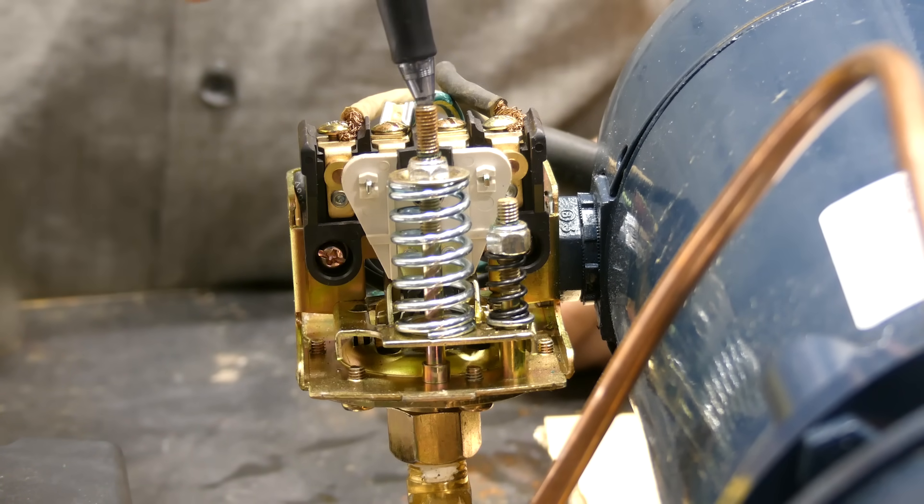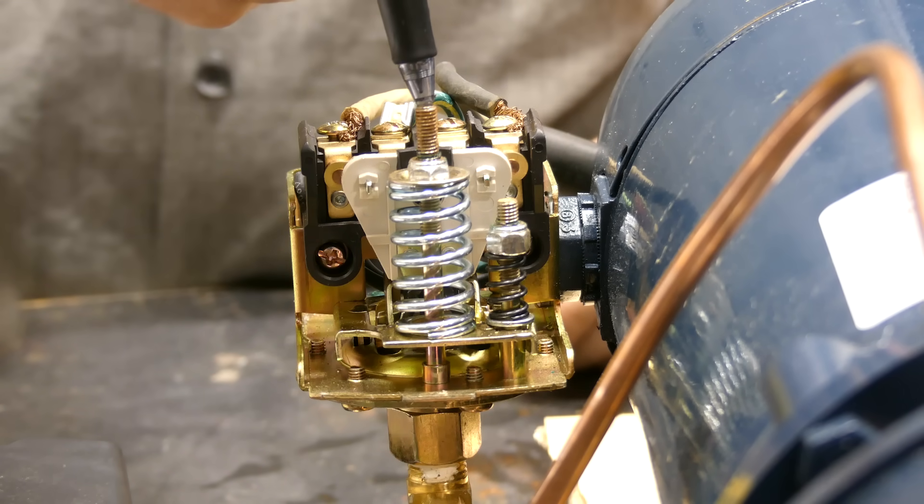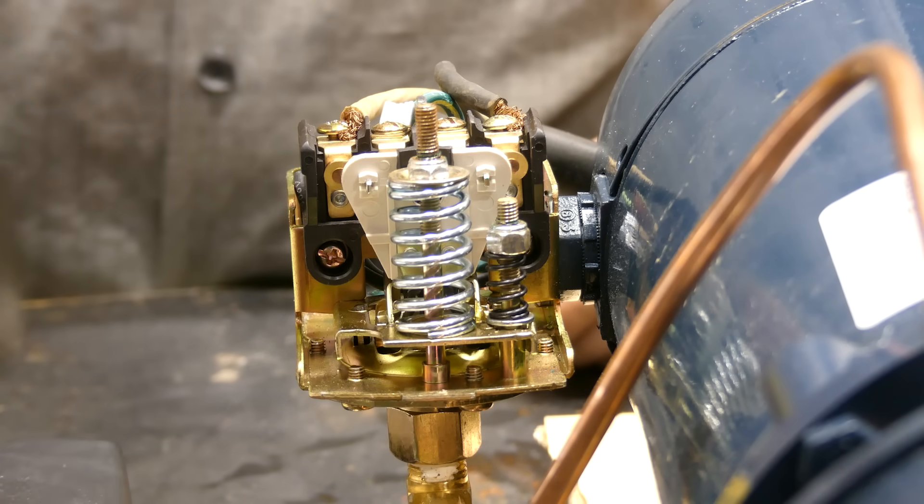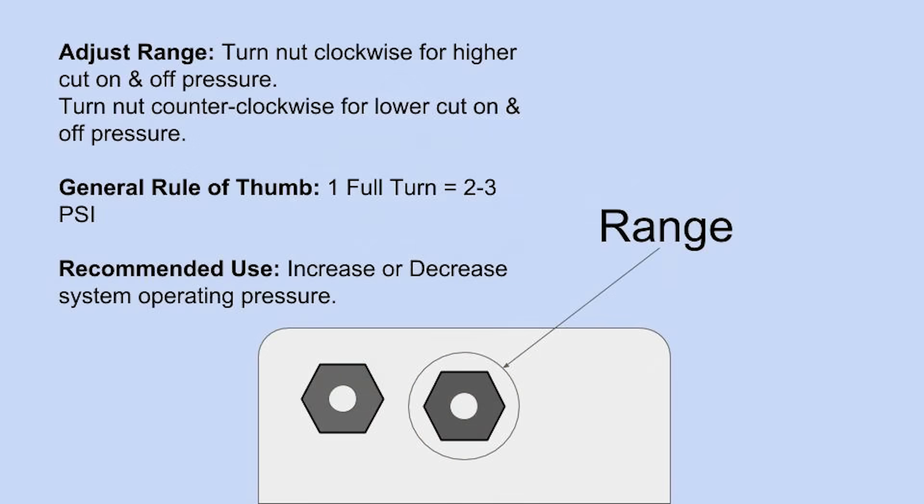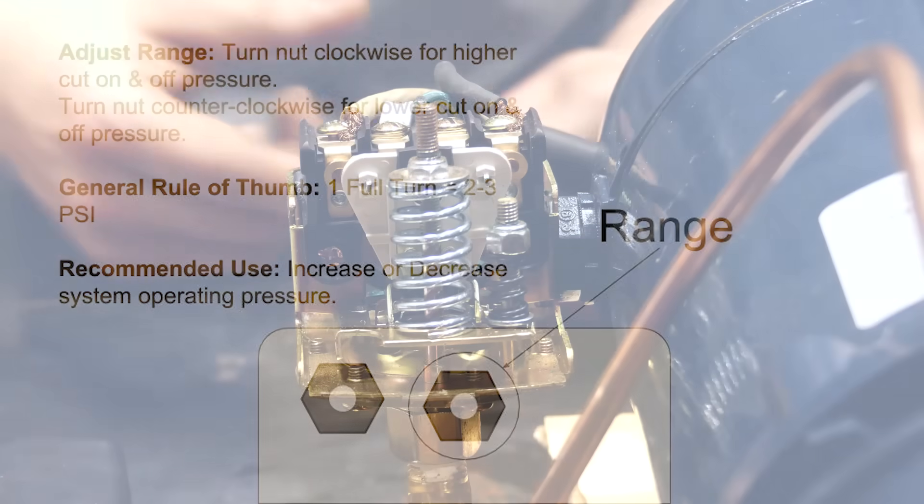So by tightening this middle set screw, we're actually increasing or raising the pressure by whatever amount, depending on the turns that we do here. This particular switch is rated about two to three PSI for every full rotation clockwise, and that would increase the pressure two to three PSI.